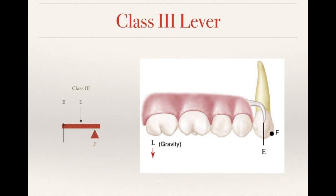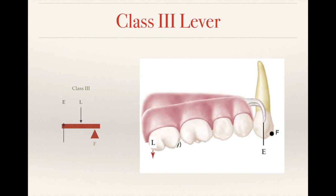When a patient wears an upper maxillary removable partial denture with distal extensions, gravity acts on it. When gravity acts on the denture, it creates a class 3 lever. So from class 1 to class 3, all three lever types occur in different situations for removable partial dentures.